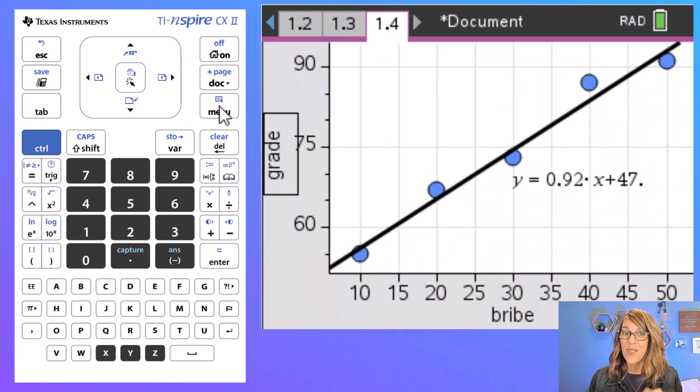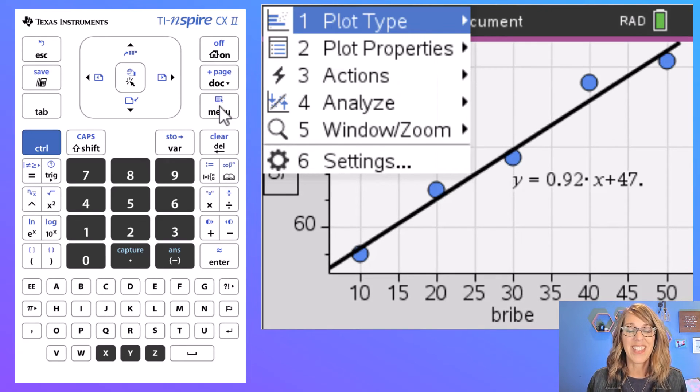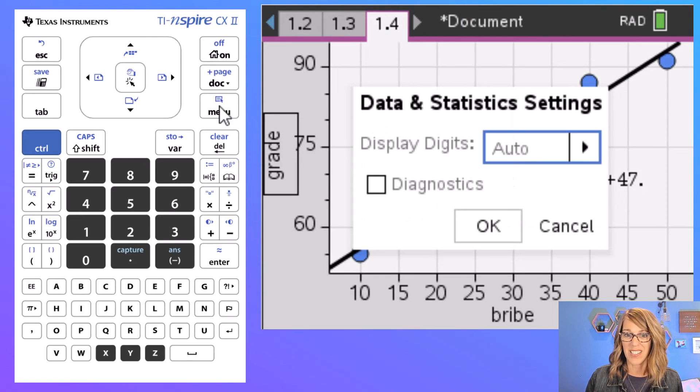But I also want that r value to get that to also show up on your graph. You want to go back to your menu and this time choose settings. So I'm going to hit number six. Look at that diagnostics checkbox. I am going to check the box.